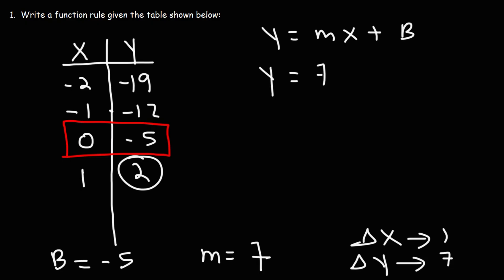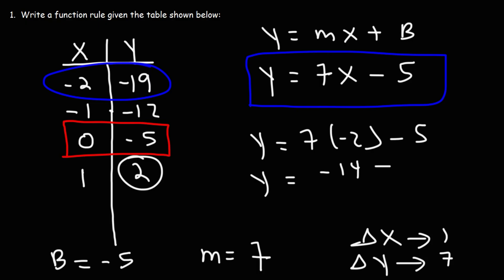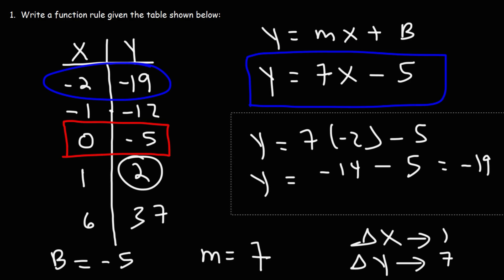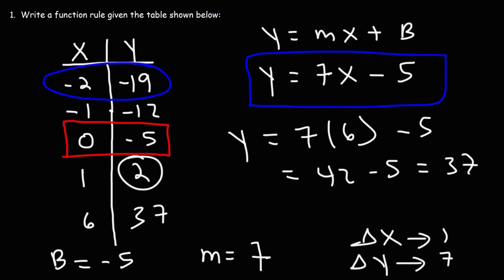Our function rule is y equals seven x minus 5. We can test it with the first point: plugging in negative 2 should give negative 19 — seven times negative 2 is negative 14, and negative 14 minus 5 is negative 19. Checking the last point, 6 and 37: seven times 6 is 42, and 42 minus 5 is 37. This is the correct function rule and it describes the data in that table.